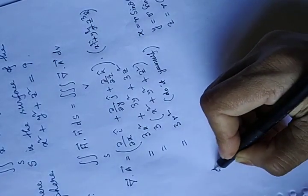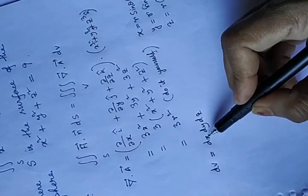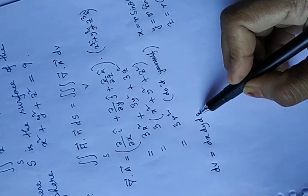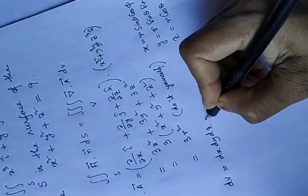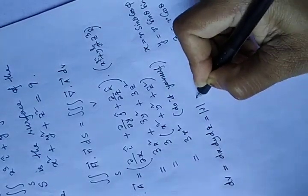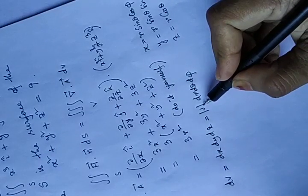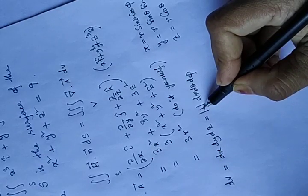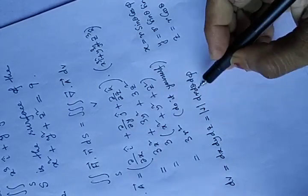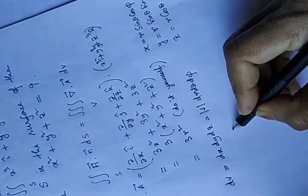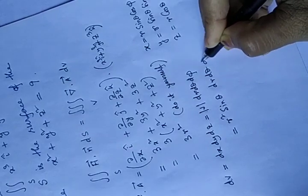Now, what is dv? dv is dx dy dz. If we shift this Cartesian coordinate system in spherical polar coordinate system r theta phi, then we will have determinant of Jacobian dr d theta d phi. This Jacobian you can find yourself. You will get r square sin theta dr d theta d phi.